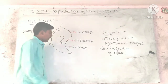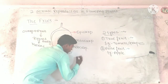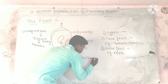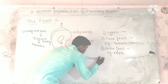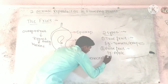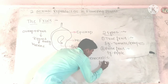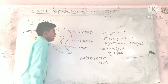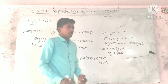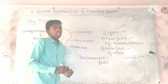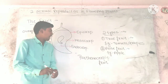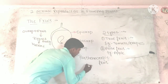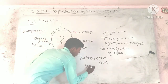Then, parthenocarpic fruit. Parthenocarpic fruit means fruit developed without fertilization is called parthenocarpic fruit. For example, banana.